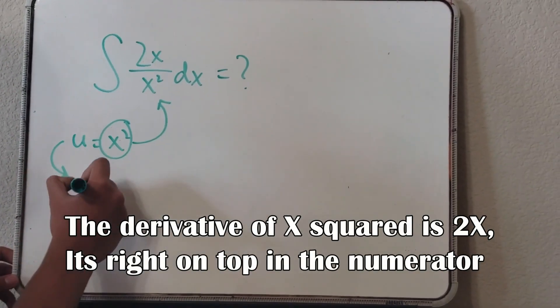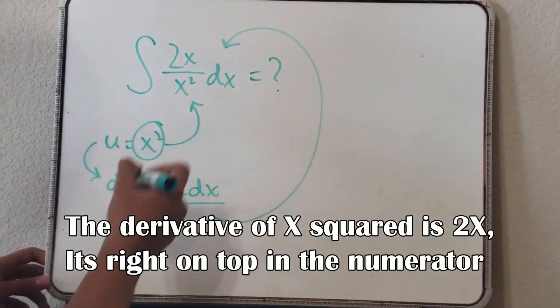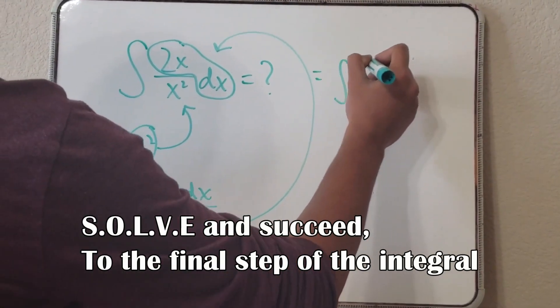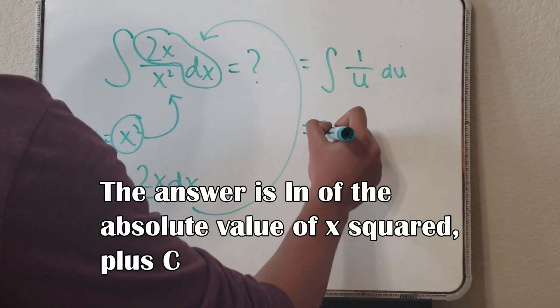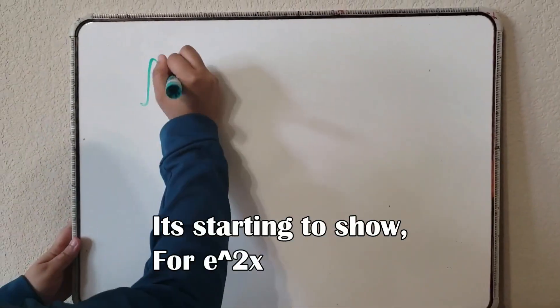The derivative of x squared is 2x, it's right on top of the numerator. Solve it and proceed, put an integral. The answer is ln of the absolute value of x squared plus C.